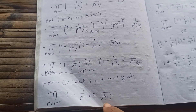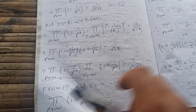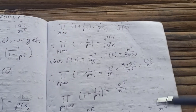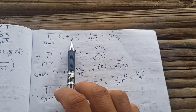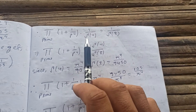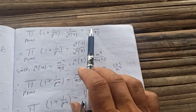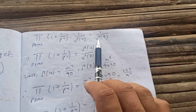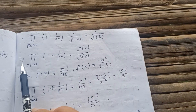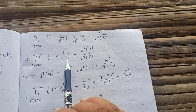Substituting, we get the product over primes of (1 + 1/P⁴) times 1/ζ(4) equals 1/ζ(8). Therefore, the product over primes of (1 + 1/P⁴) equals ζ(4)/ζ(8).